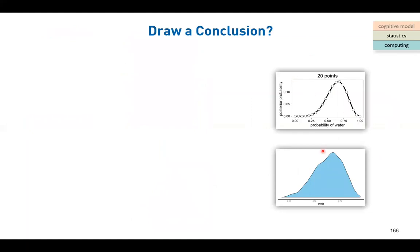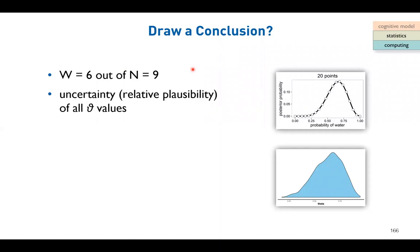To put them all together: the result from grid approximation and from STAN MCMC sampling, we can draw conclusions. From the data - six water observations out of nine experiments - instead of getting a point estimation as with maximum likelihood or frequentist estimates, we get the uncertainty or relative plausibility of all theta values.